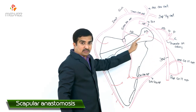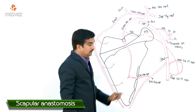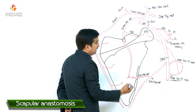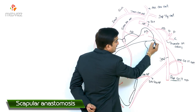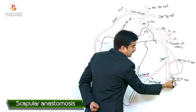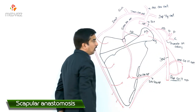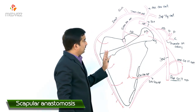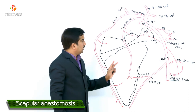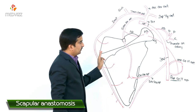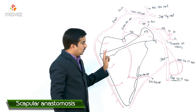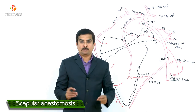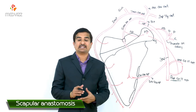The acromial branch of the thoracoacromial artery, which arises from the second part of the axillary artery, takes part in the anastomosis around the acromion process of the scapula. The third artery contributing is the acromial branch of the posterior circumflex humeral artery. So the three acromial branches — from the suprascapular artery, thoracoacromial artery, and posterior circumflex humeral artery — all take part in the anastomosis around the acromion process of the scapula.